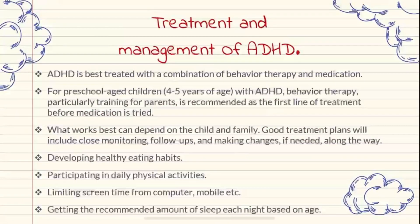Treatment and management of ADHD can be done together. ADHD is best treated with a combination of behavior therapy and medication. For preschool-aged children, behavior therapy — particularly parent training — is recommended as the first line of treatment before medication is tried. It can also be managed through developing healthy eating habits such as fruits and vegetables, participating in daily physical activities, limiting screen time for computer, mobile, and television, and getting the recommended amount of sleep each night based on age.